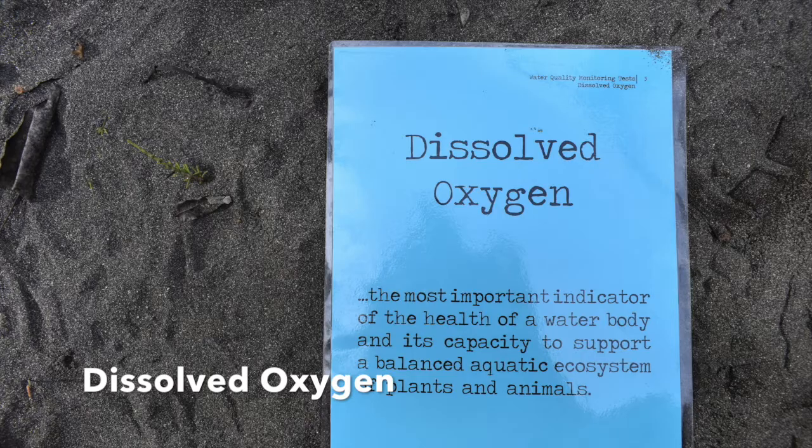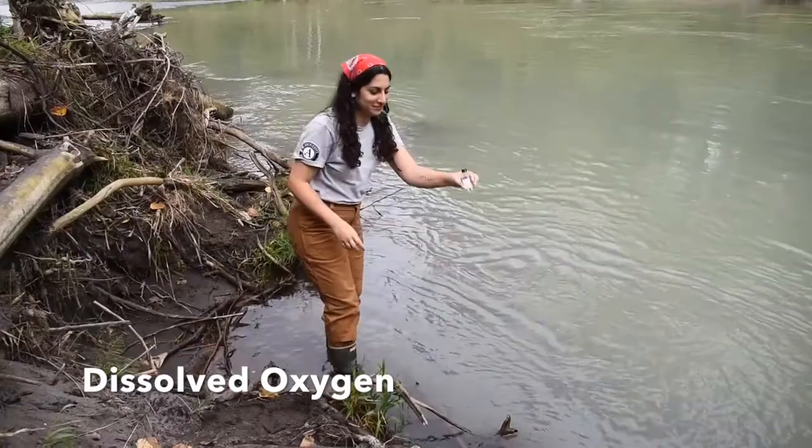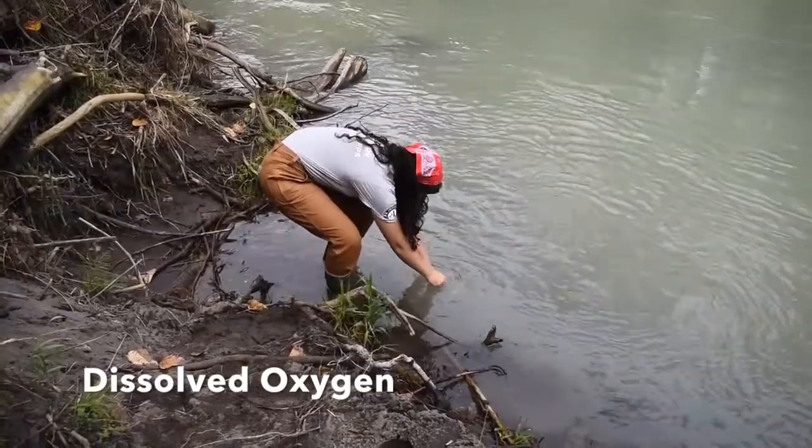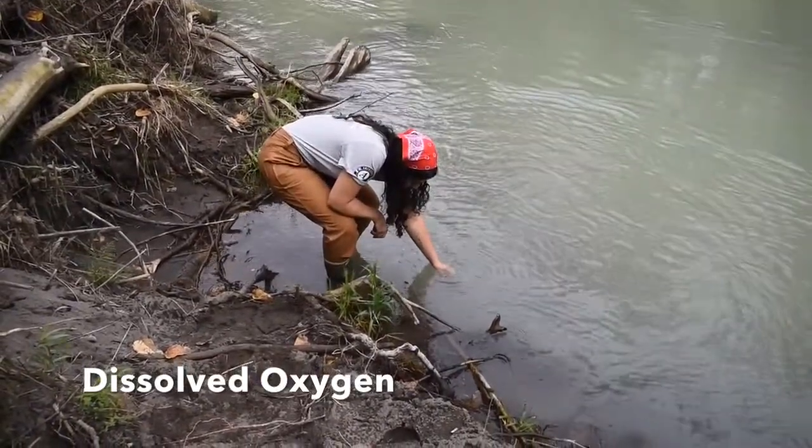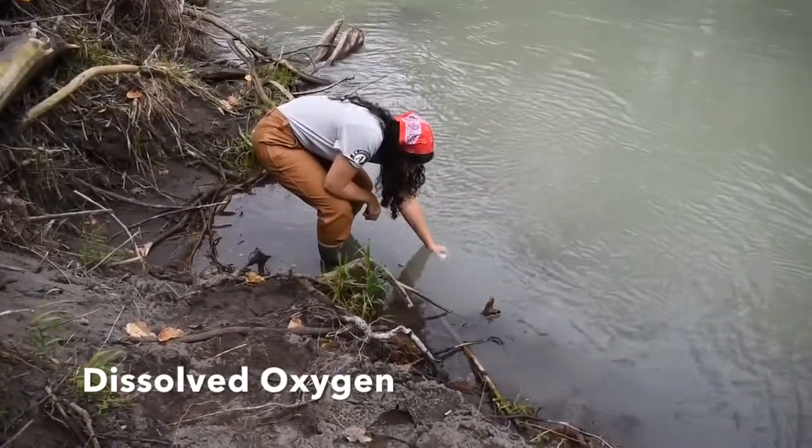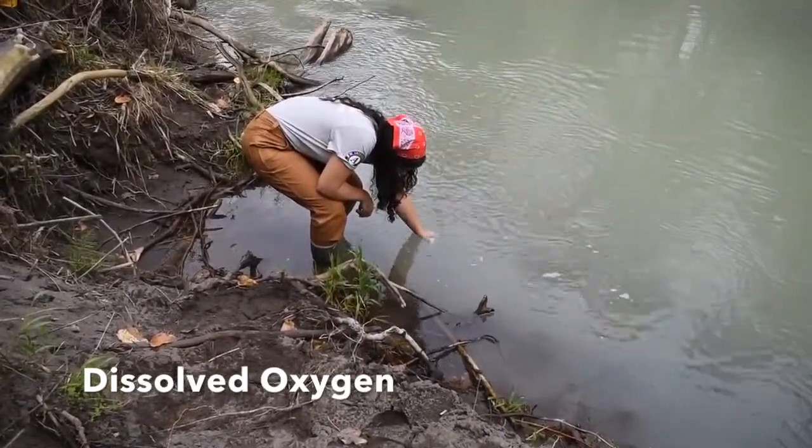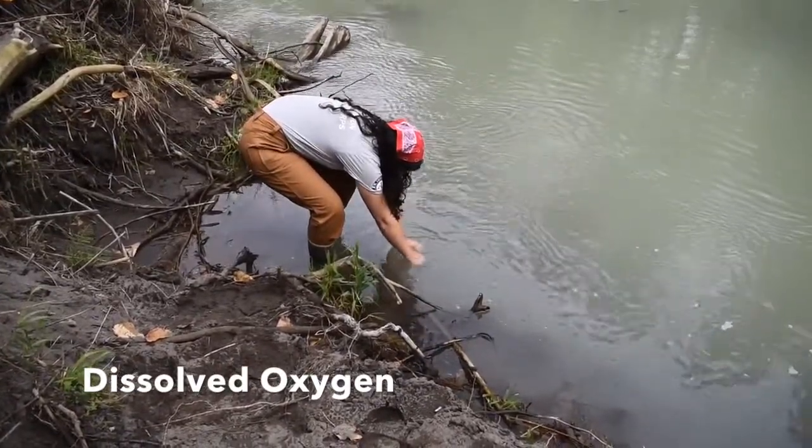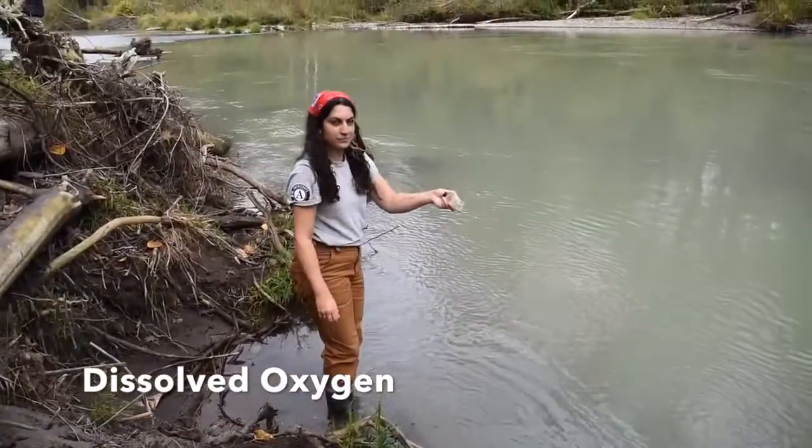To test dissolved oxygen, we need to collect our water a little bit differently. First we submerge our collection bottle under the water with the cap on, then remove the cap and tilt the bottle upward to release all of the bubbles. After holding the bottle facing upstream for one minute, we will cap it under the water and bring it out and check that there are no bubbles.